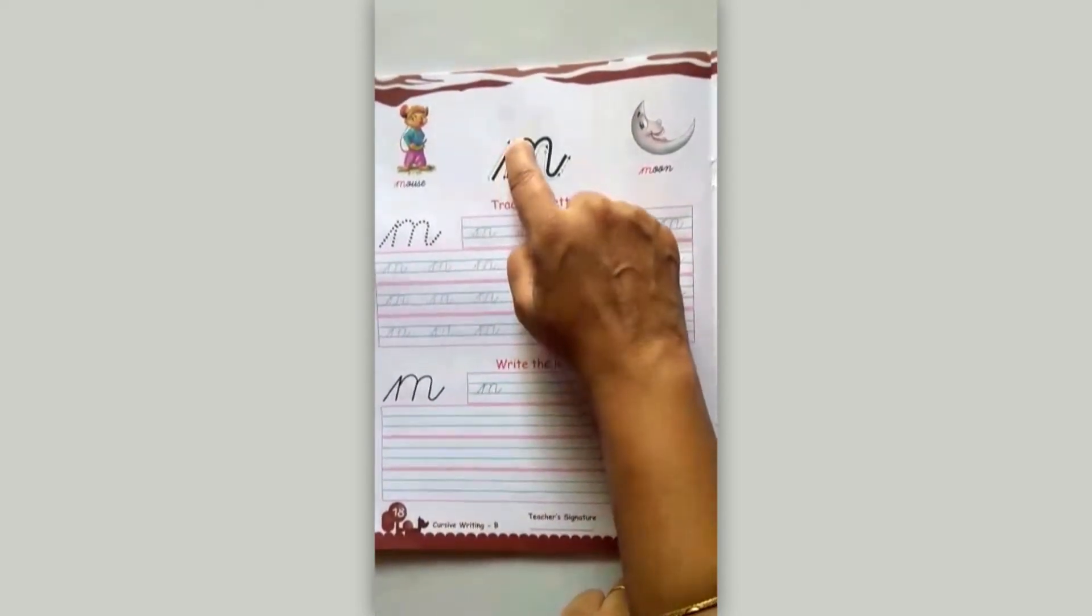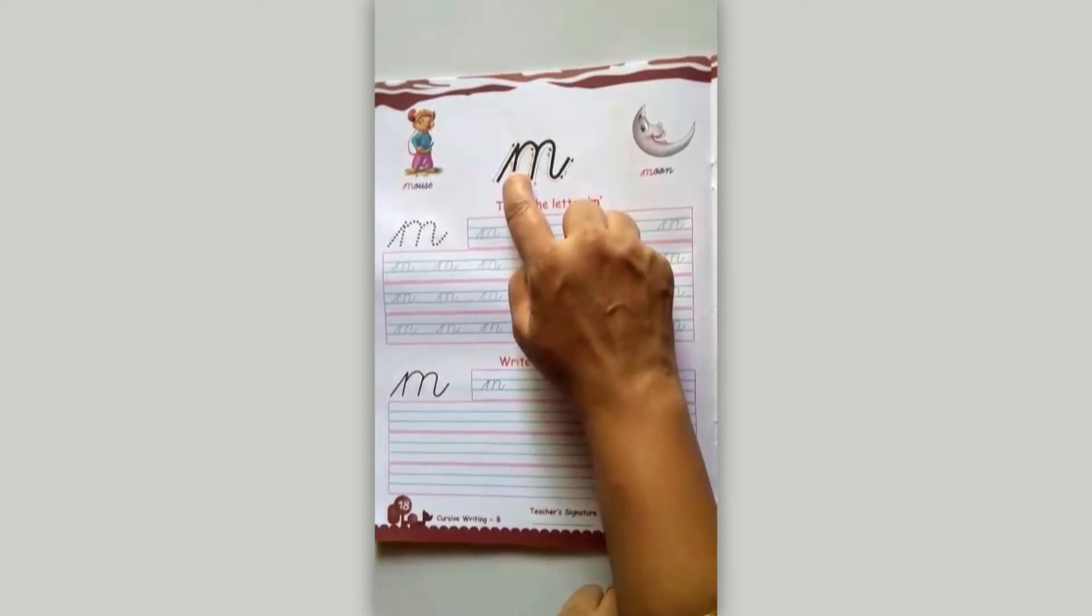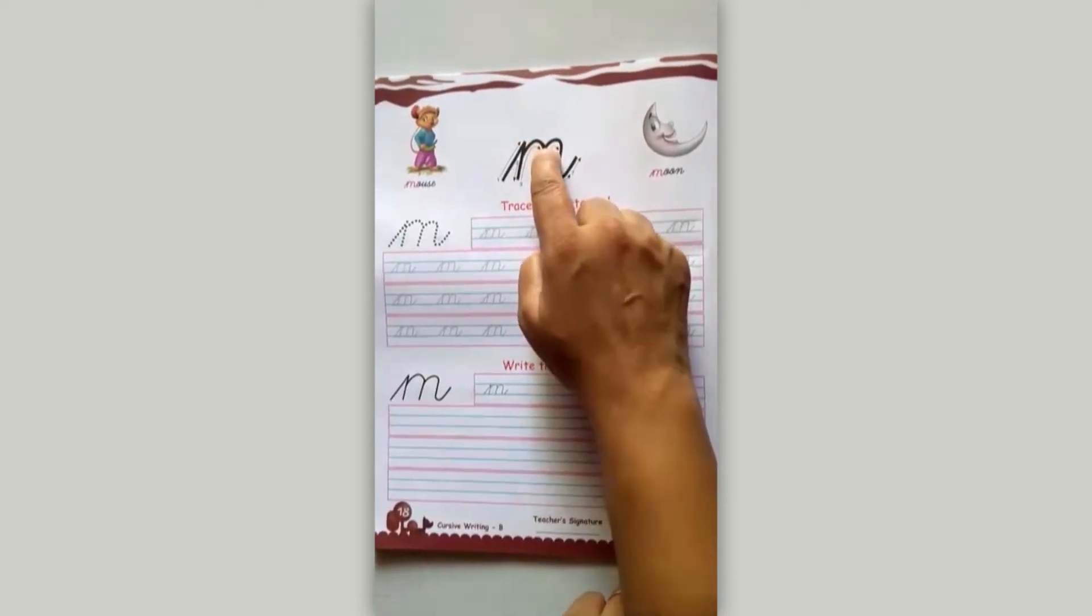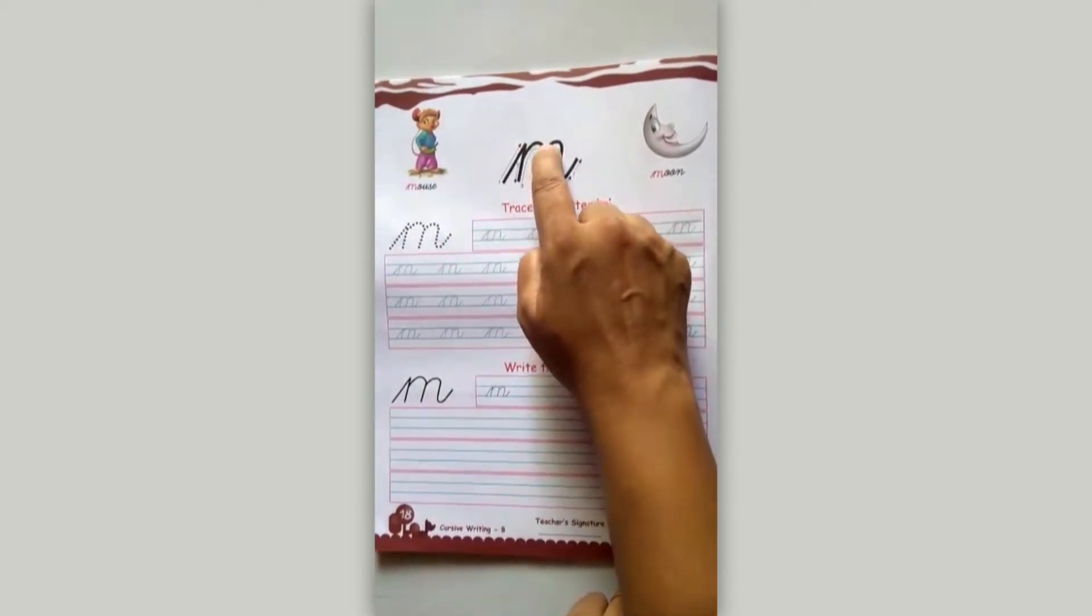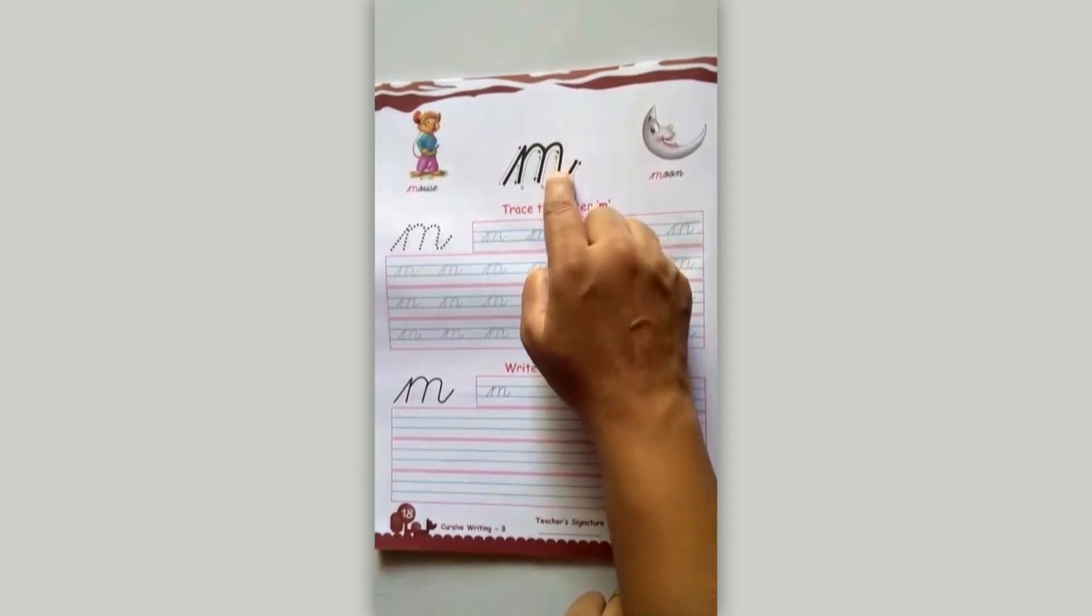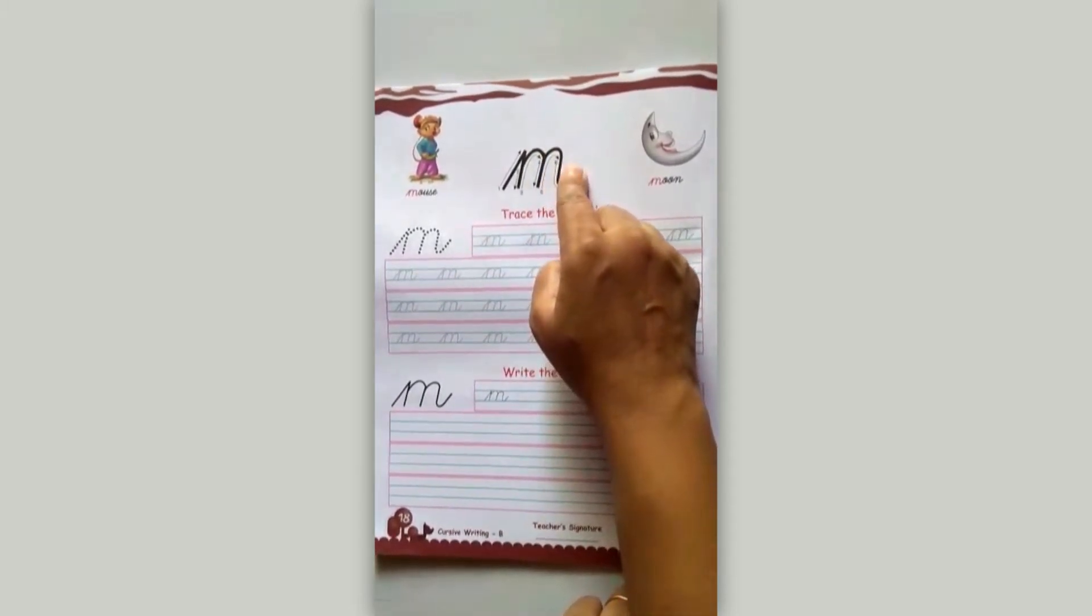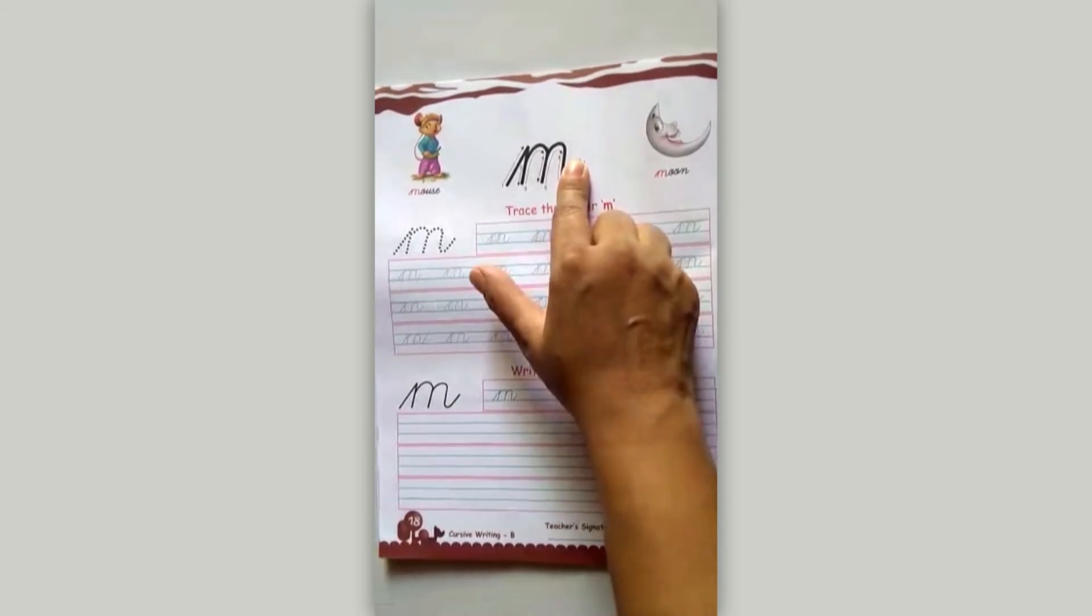A slanting line like this. Come down. Go up. A curve and a line. Again go up and a curve like this. And this. This is same like print M. Okay?